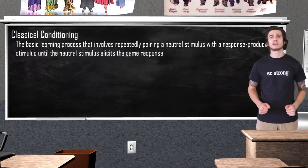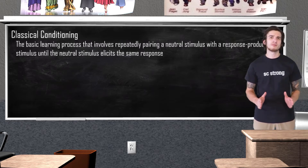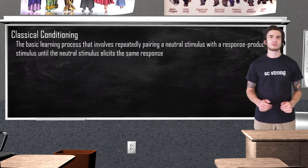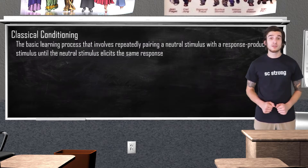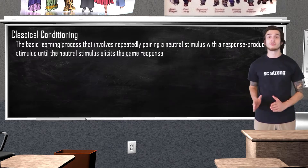When broken down, it's fairly simple to understand. Classical conditioning is just a process of learning by creating associations between various stimuli. When presented with a classical conditioning scenario, there are a few things you are going to be asked to identify: the unconditioned stimulus, unconditioned response, conditioned stimulus, and conditioned response.